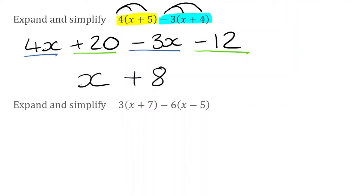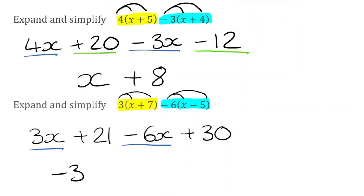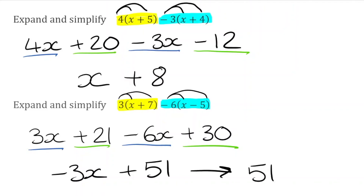For our final question, the first bracket is 3(X+7) and the second is negative 6(X-5). Expanding: 3 times X is 3X, 3 times positive 7 is positive 21, negative 6 times X is negative 6X, and negative 6 times negative 5 is positive 30. Collecting like terms: 3X take away 6X is negative 3X, and 21 plus 30 is positive 51. We can also write this as 51 take away 3X.